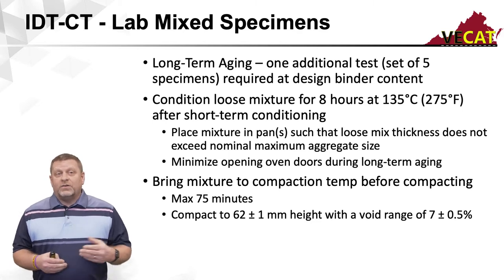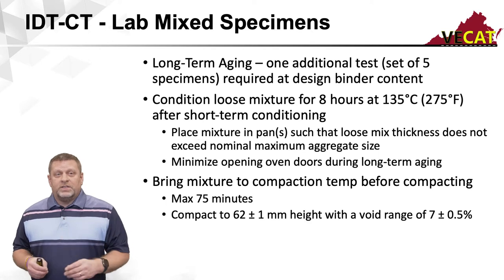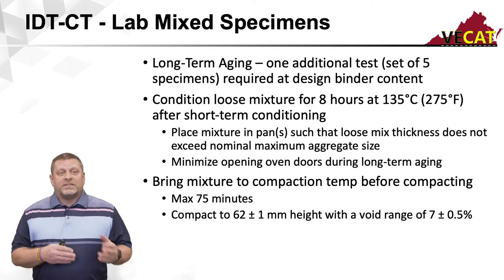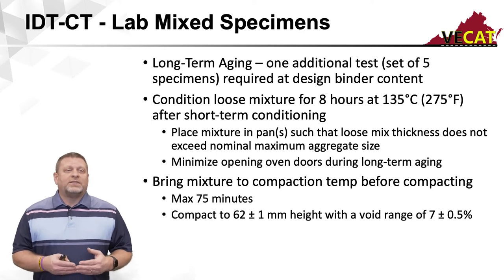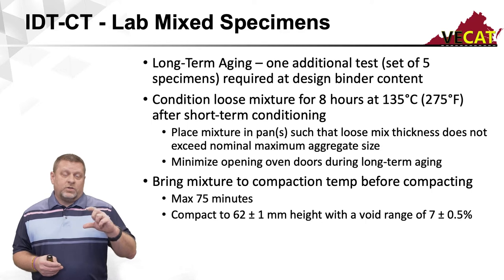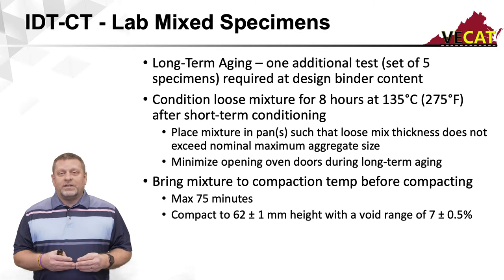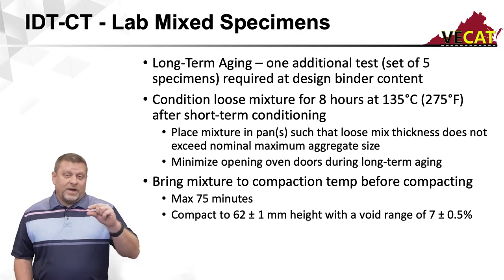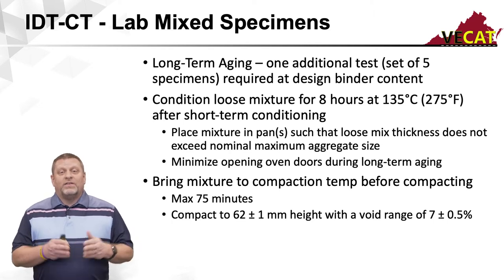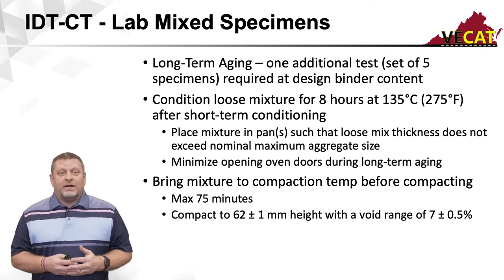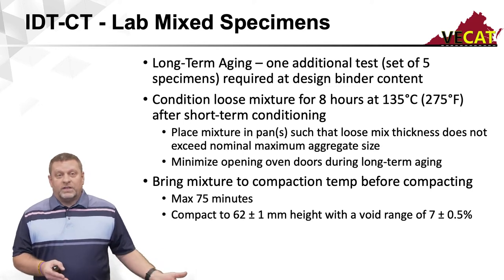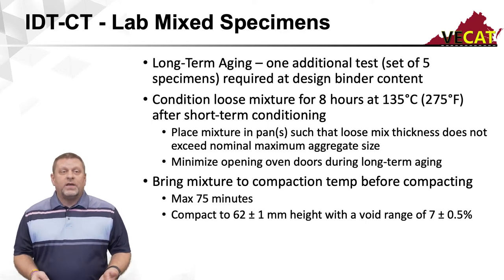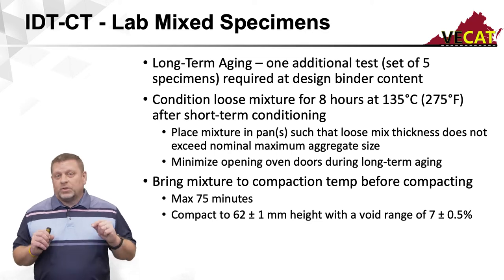Come in the next morning and do the eight hours of long-term aging at 275°F. One additional requirement: during long-term aging, the specimen thickness is no longer one to two inches — it is maximum nominal aggregate size. So for a 12.5 mix, the thickness can only be a half inch, which means I need an even larger pan. I highly recommend at the end of your short-term aging the day before, go ahead and spread the mix out into a larger pan so it's ready to go in the oven the next morning.